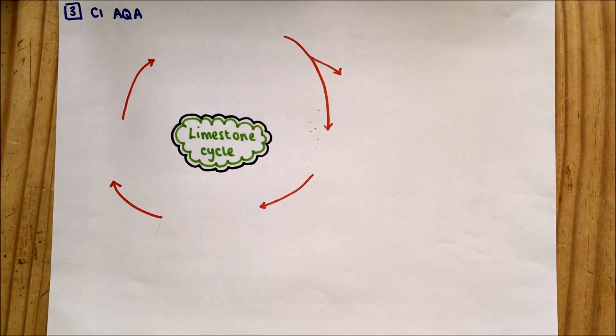This is video number three for C1 chemistry revision. We're going to look at the limestone cycle. You need to know the process that limestone goes through - it's broken down, then we can make it into lime water and turn it back into limestone again. You'll need to know the stages because they could pick any stage for this cycle.